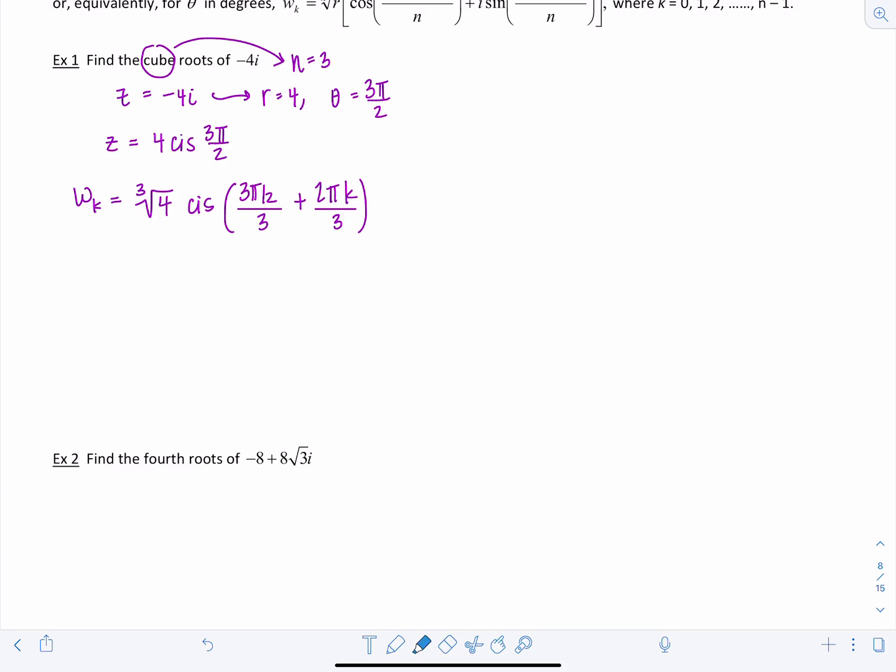I'm sorry I said divided by k and then divided by n. So whatever n is you take that root of r and then you divide the angle and then you add 2 pi k divided by n again. And then now we're going to clean it up a little bit before we start evaluating it. So cube root of 4 I can't do anything with that, and then I'm going to have cis 3 pi over 2 divided by 3, that's just pi over 2, plus this is going to be 2 pi over 3 times k.